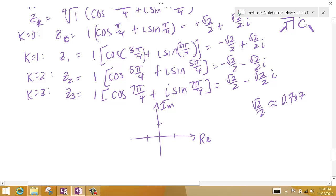So 0.707, so maybe like here, and then I have negative in here, here, and here. So those are the fourth roots of negative 1.